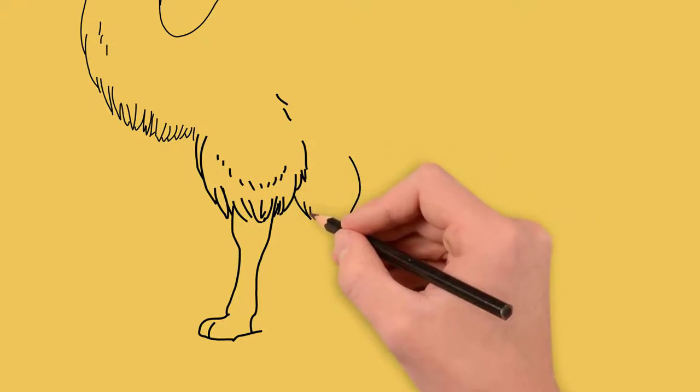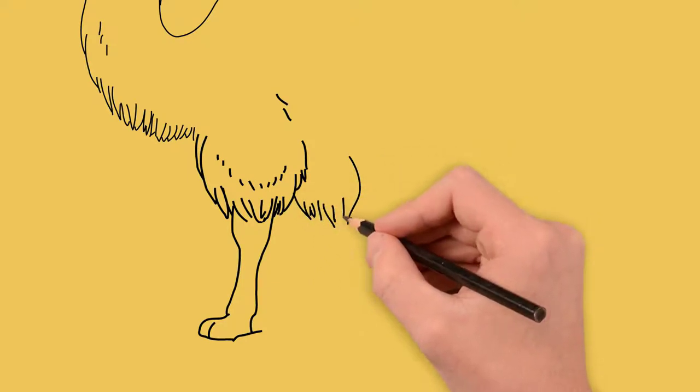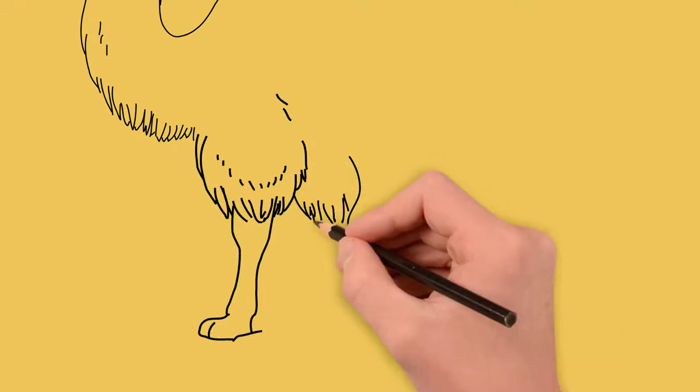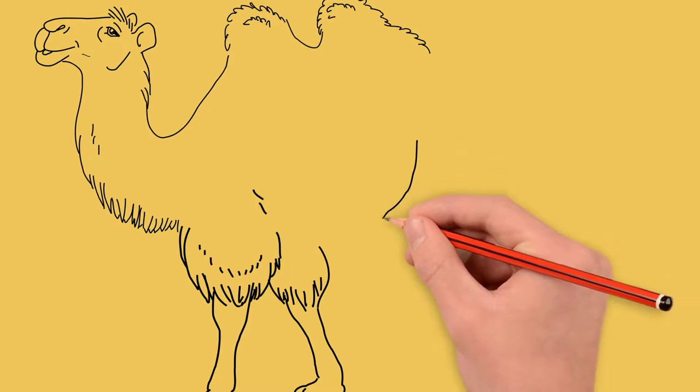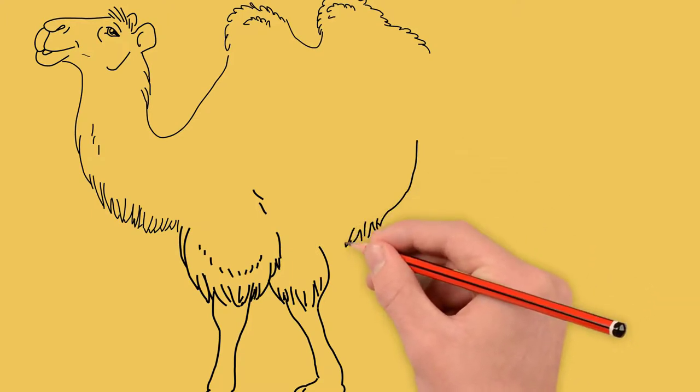Draw the second leg. She is one step behind the first. We also draw a hoof. Above the knee draw a little hair. Yes, as we see in the camel. This helps the camel to maintain temperature balance.